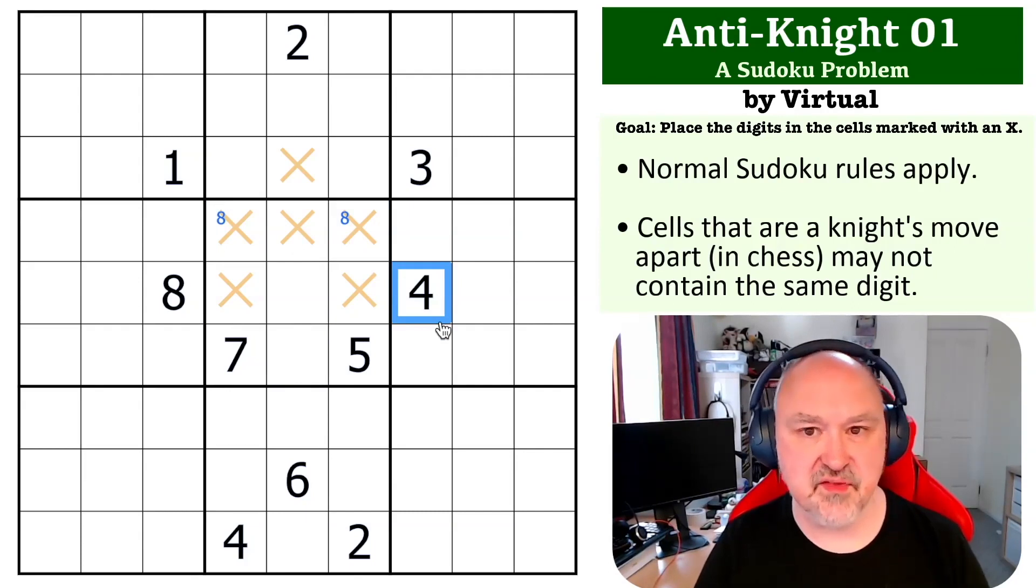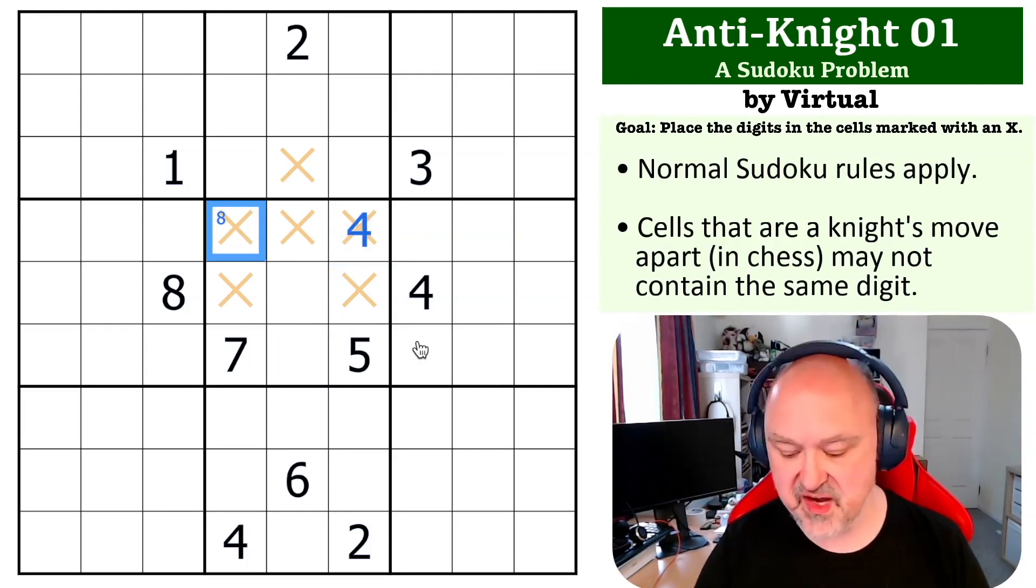And if you look at this four, it's even more constrained, because it can't go in any of those cells. It can't go in those by knight move, and it can't go there by the fact that there's a four in the column. So this is the only place in the box for a four, which has taken the position of an eight, and that becomes the eight.